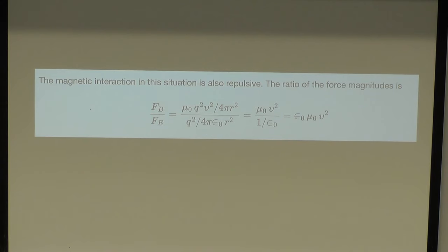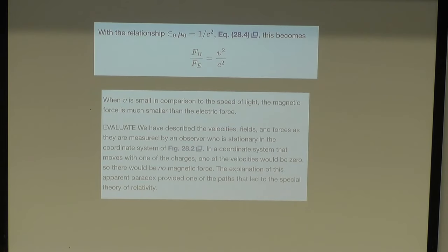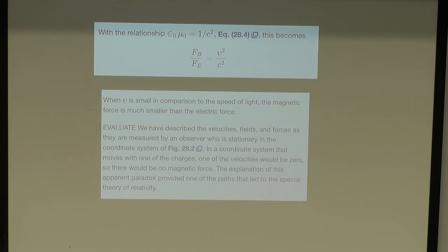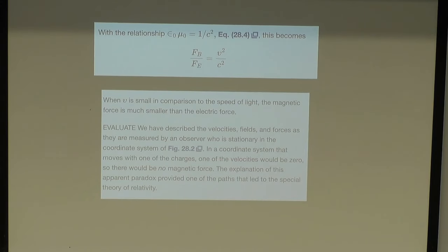At slow velocities the magnetic force is much smaller than the electric force, and the ratio increases with increasing velocity. We describe the velocities, fields, and forces as measured by a stationary observer. If we started considering ourselves not at rest, we might encounter a paradox that would lead us toward special relativity.